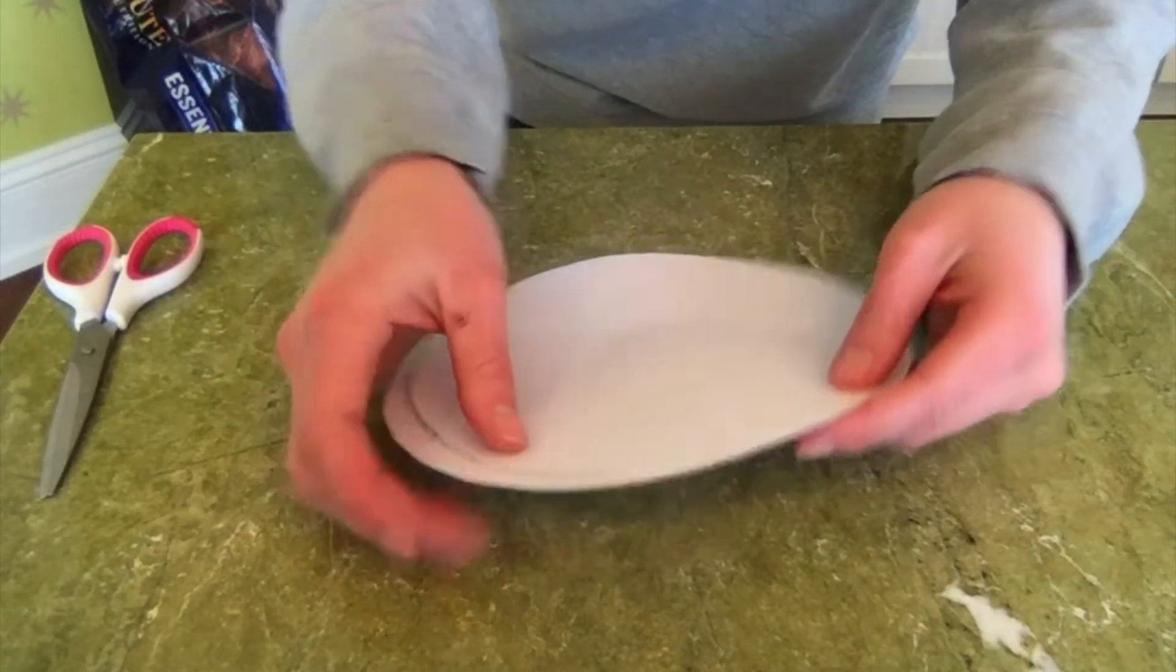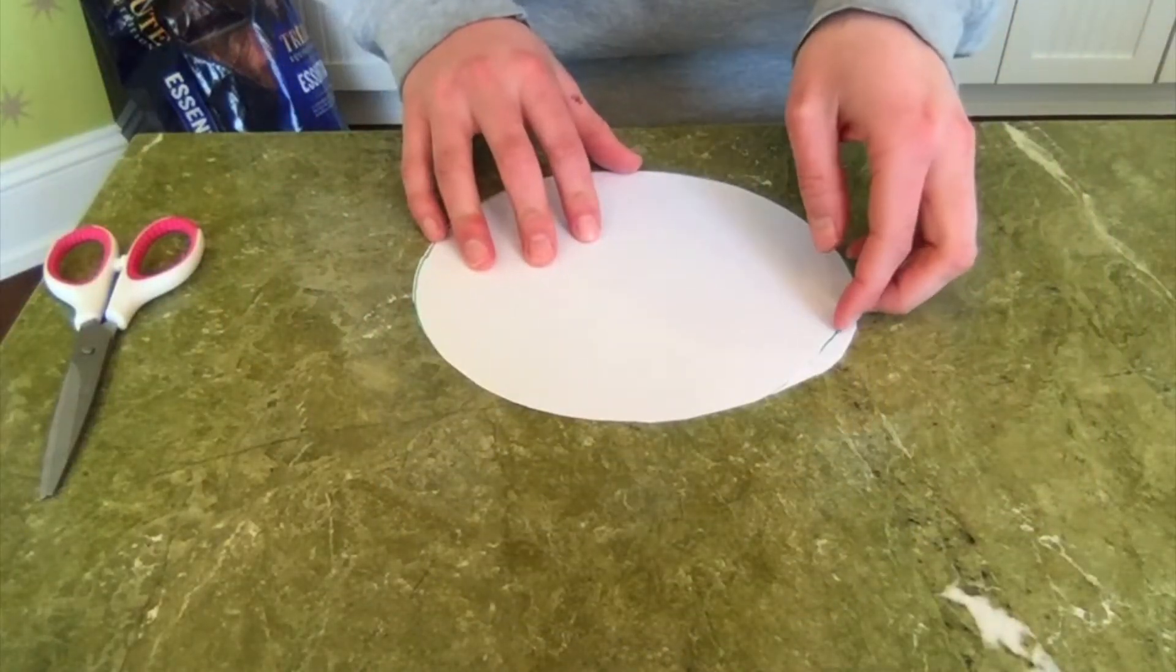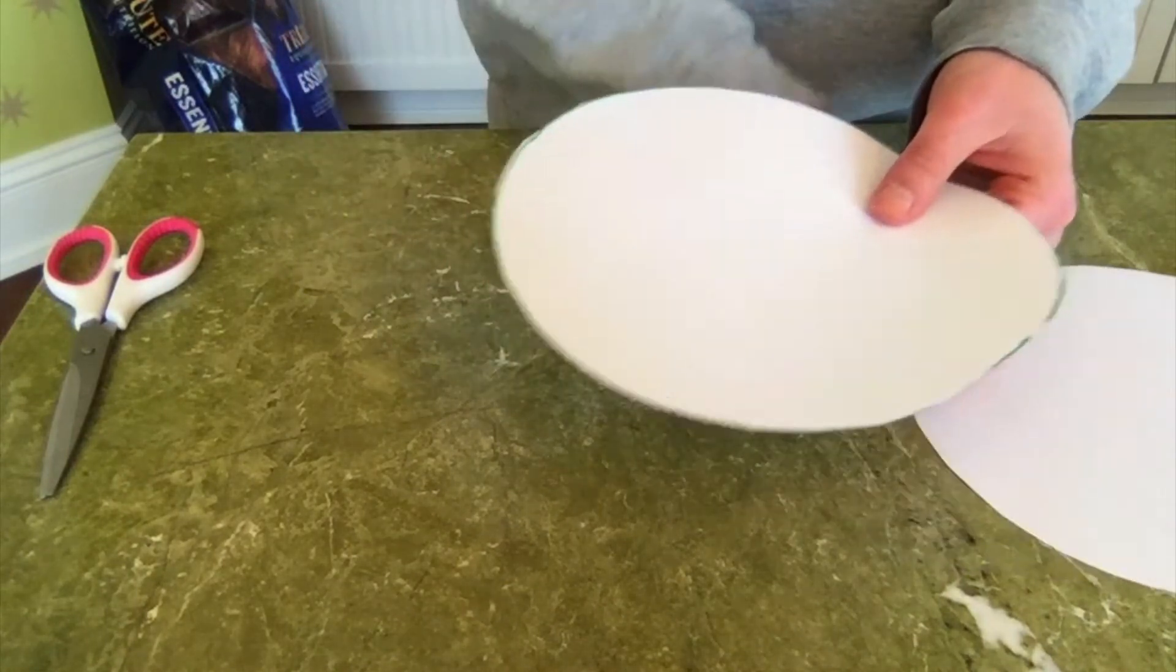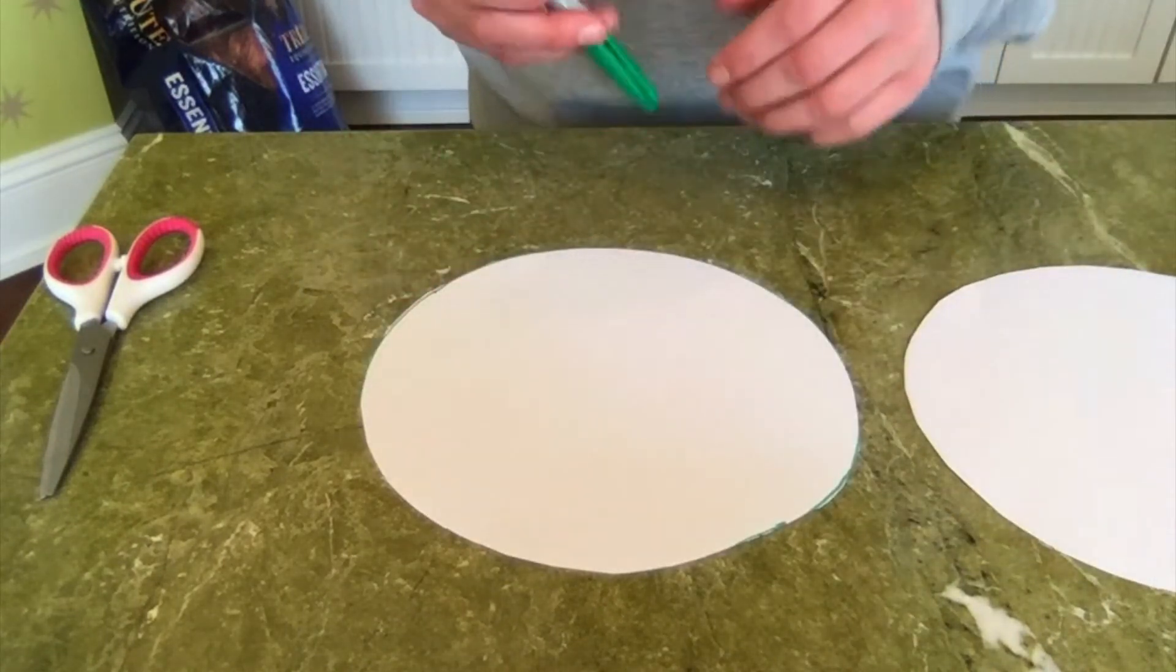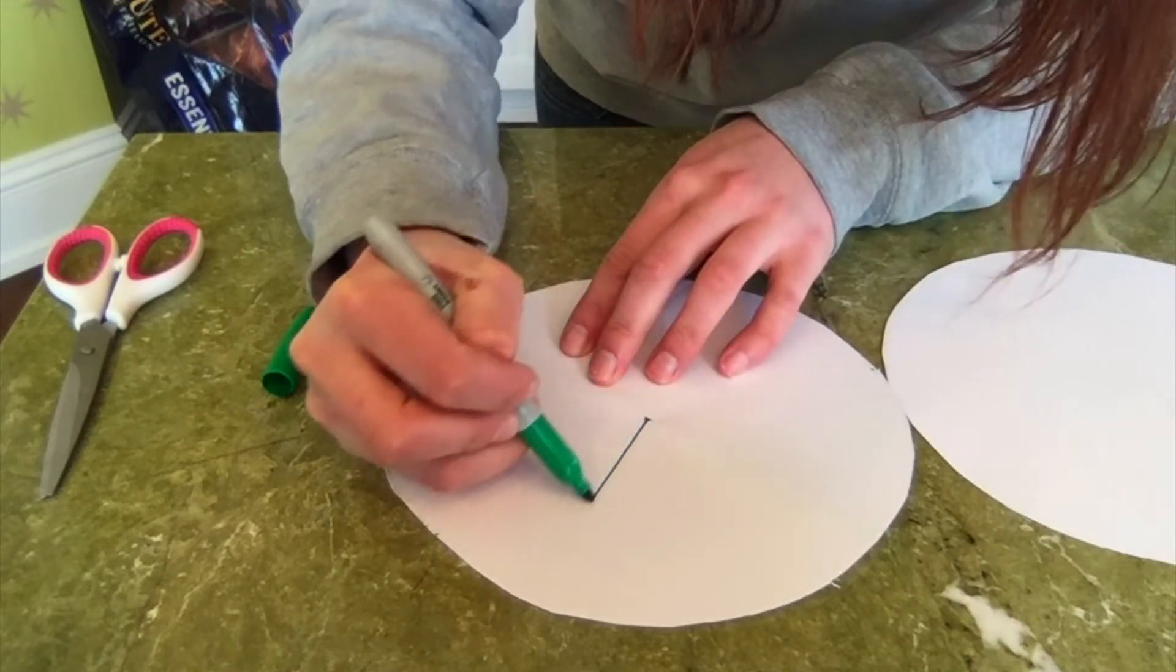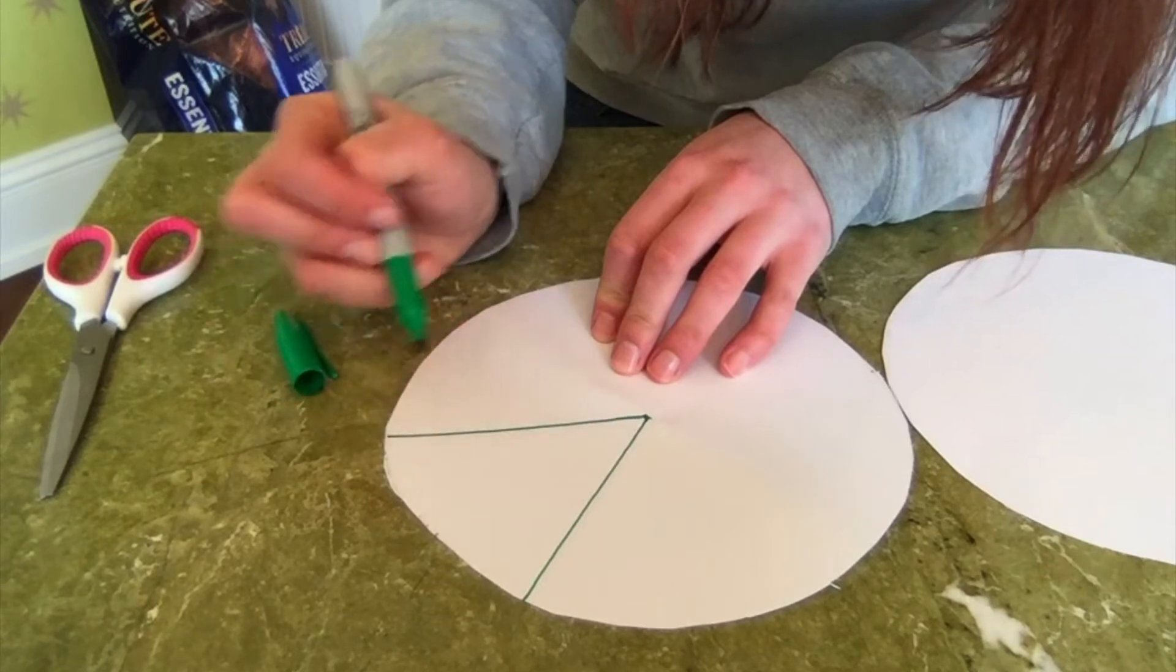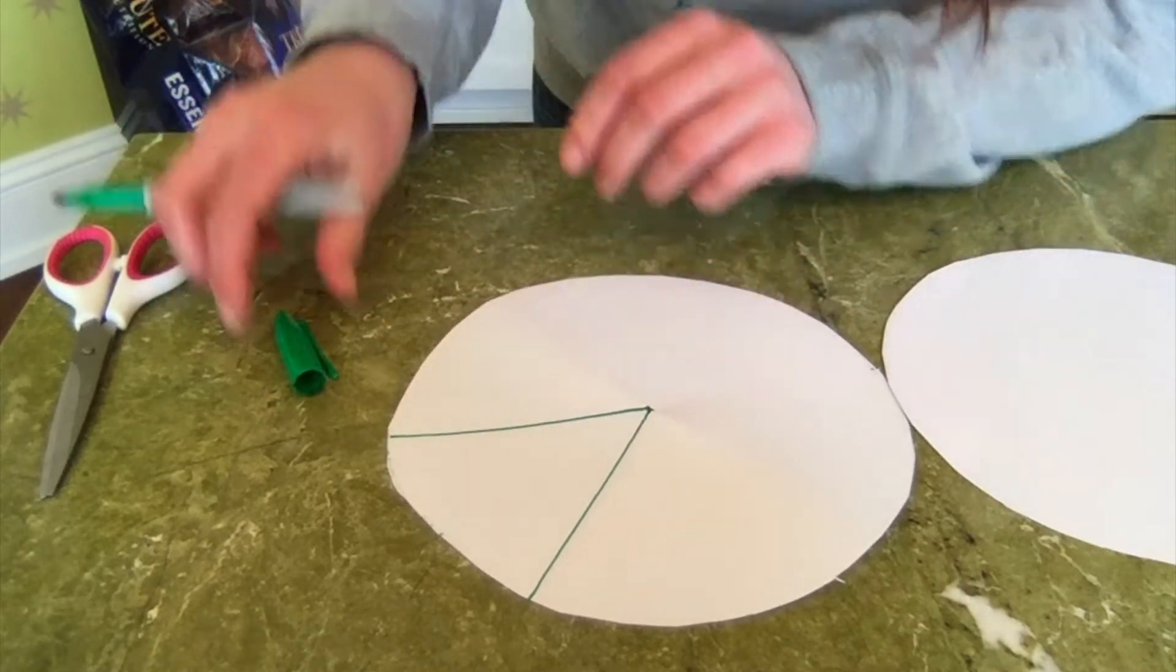Now what we're gonna do next is we're gonna take the top circle and we're gonna find, we're gonna estimate the center of it. I'm gonna draw a straight line to the edge of my circle. So see how it's made like a little pizza slice there?